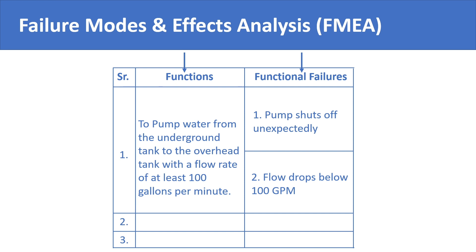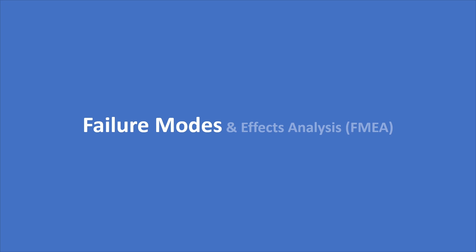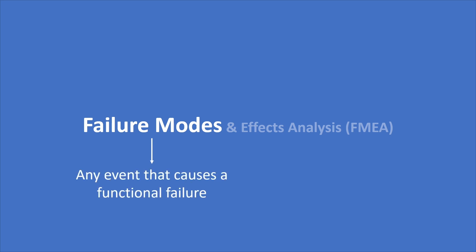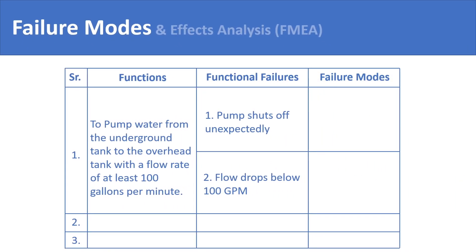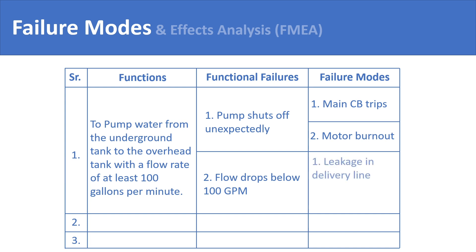The next step in the process is to list down the failure modes of each functional failure. The failure mode is any event that causes a functional failure. For example, the pump could shut off unexpectedly because of the tripping of its main circuit breaker, or due to burnout of its electric motor — both of these are failure modes. Coming to the second functional failure, the flow rate of the pump could drop below 100 gallons per minute because of a leakage in the pump's delivery line, or maybe a worn-out impeller.